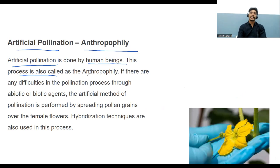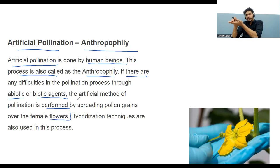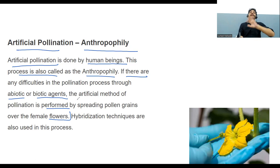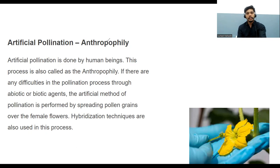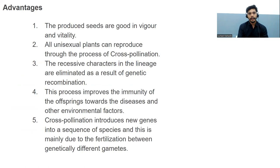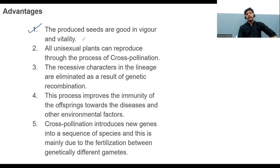If there are any difficulties in pollination through biotic and abiotic agents, the artificial method of pollination is performed by manually spreading pollen over the female flower. This is called anthrophily. The seeds produced by this method have good vigor and vitality because there are variations.